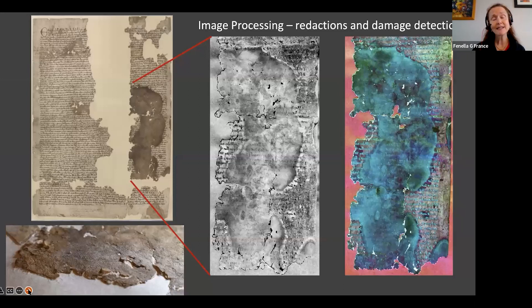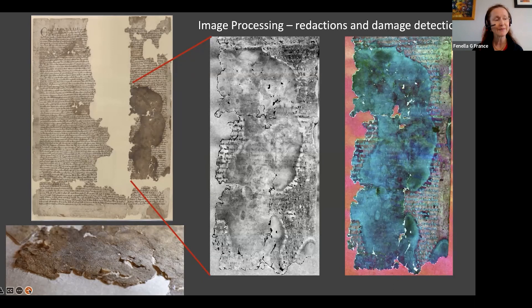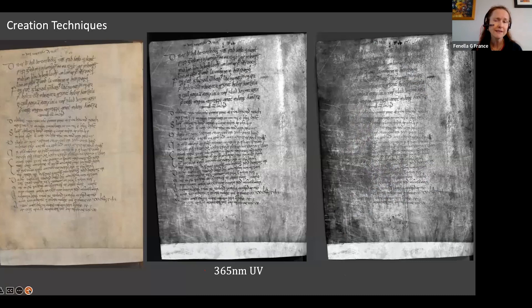An example of recent work is the 1300 Magna Carta on exhibit in Washington DC. You can see there are serious areas of loss — that large stain is very likely rodent urine — but we can now image through that and bring out the original text information from around 1300, when Edward reissued it. A lot of historians are curious to see what some of that reissued text was.